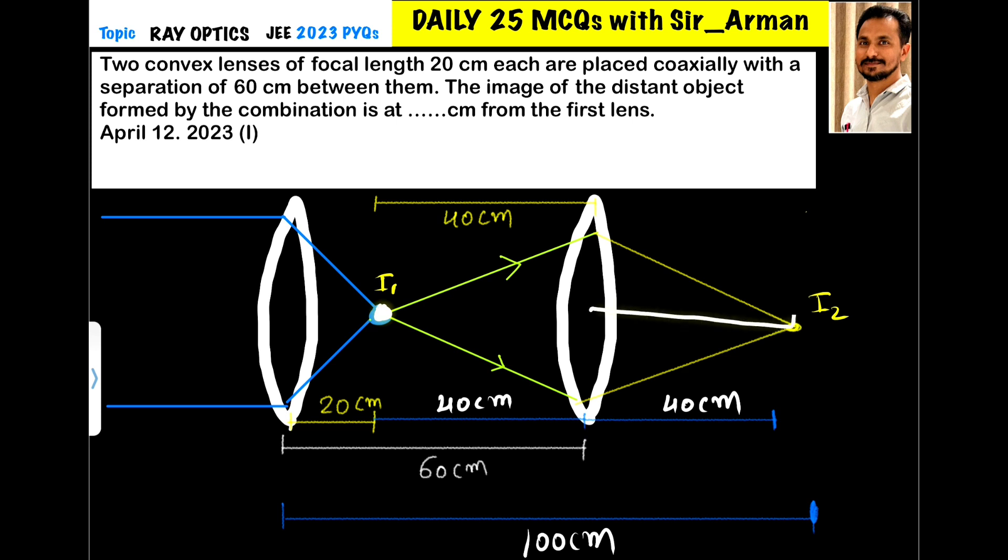So you will get image on the other side at the same distance, at 40 centimeter. Now what is asked here: the distance of the image of the distant object formed by the combination is at dash centimeter from the first lens. So from the first lens the distance is 60 plus 40, it is 100 centimeter.